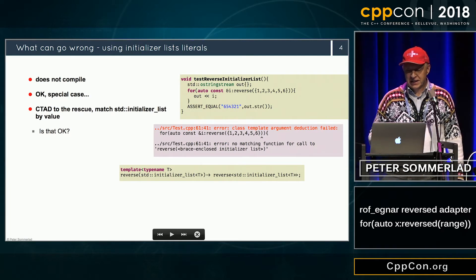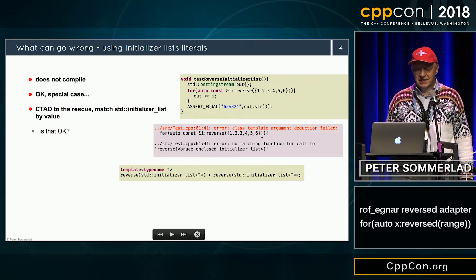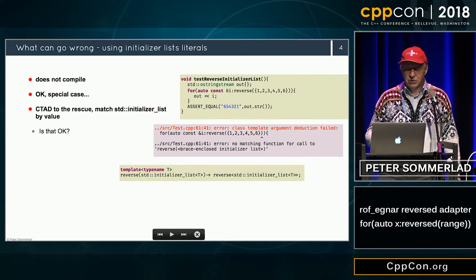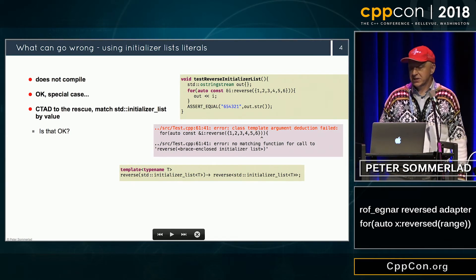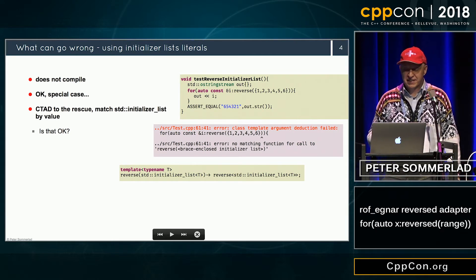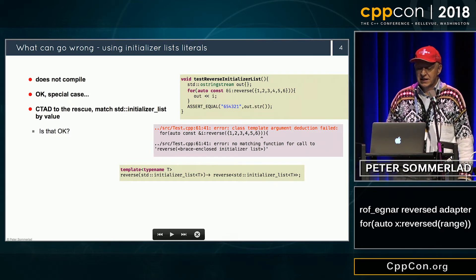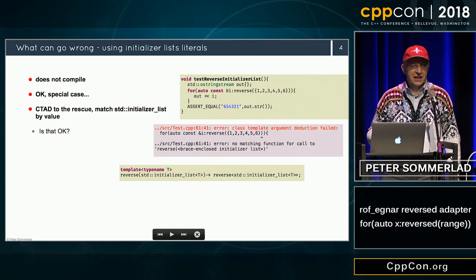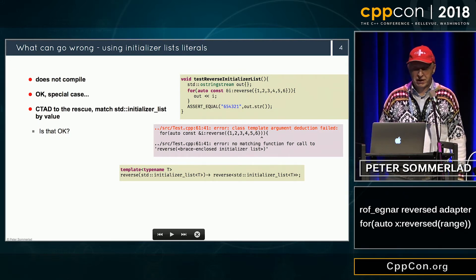If you do something like that with initializer lists, which are quite special, it doesn't even compile. C++17 class template argument deduction makes it happy. We can cheat the compiler and say: if we get an initializer list, just reverse the initializer list and don't take it by reference or by r-value reference.